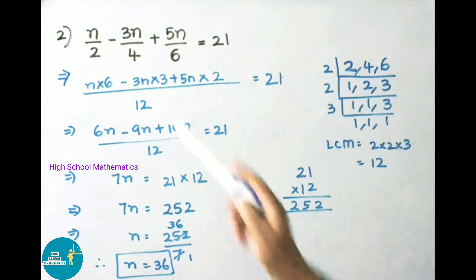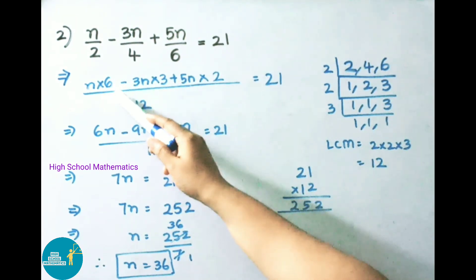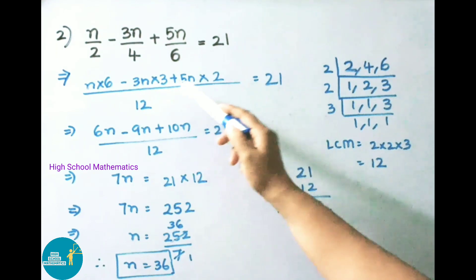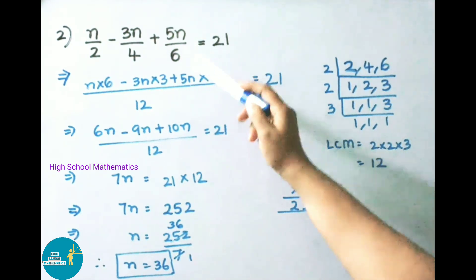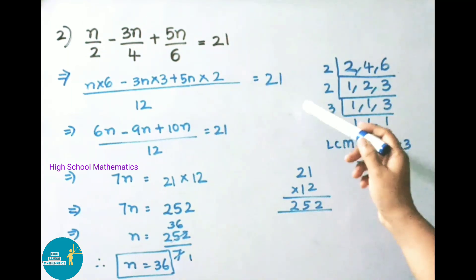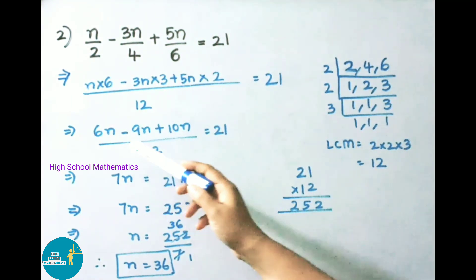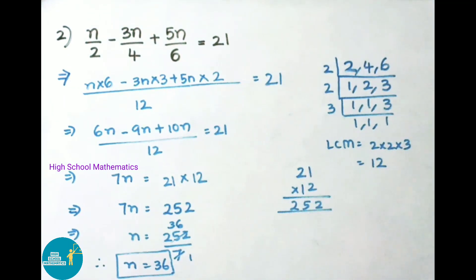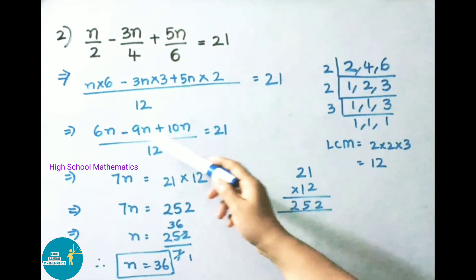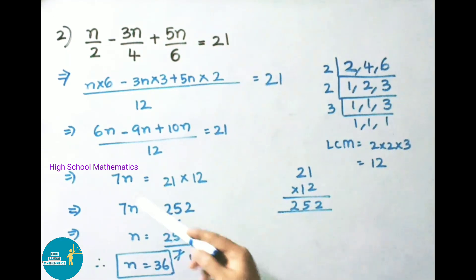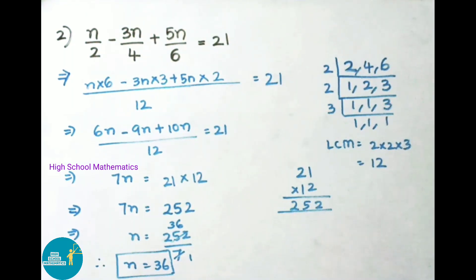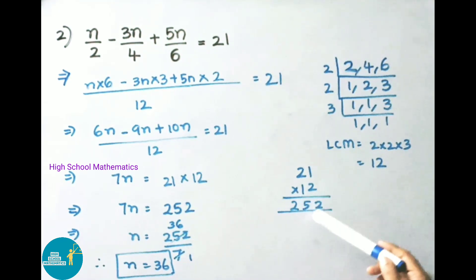Now let us take the numerator part. 12÷2=6, so n×6; 12÷4=3, so 3n×3; 12÷6=2, so 5n×2. That equals 21. This gives 6n - 9n + 10n = 21×12. Simplifying: 6n + 10n - 9n = 7n. So 7n = 21 × 12 = 252.